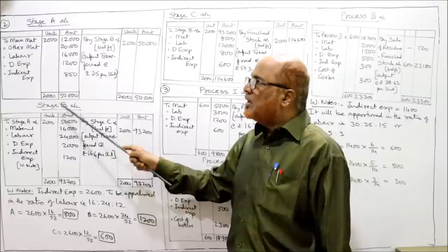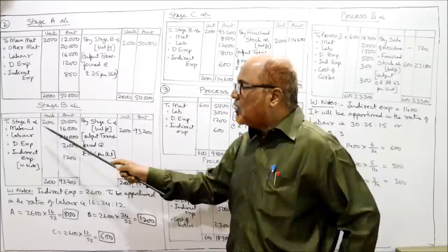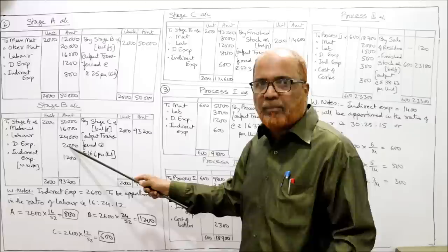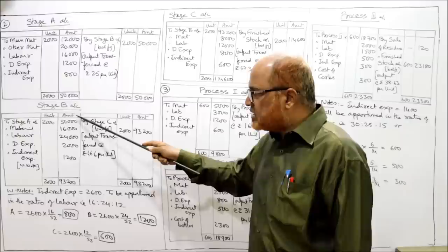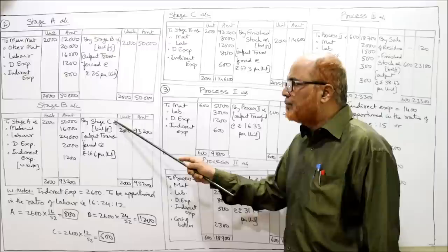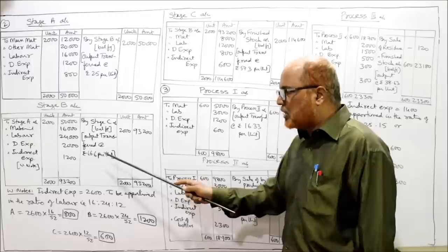Stage B account — debit side: to Stage A account 2,000 units, 50,000 rupees; to material 16,000; to labour 24,000; to direct expense 2,000; to indirect expense 1,200. Total debit side = 93,200 rupees for 2,000 units. Credit side — by Stage C account balancing figure: 2,000 units, 93,200 rupees. Output transferred at 93,200 / 2,000 = 46.6 rupees per unit.